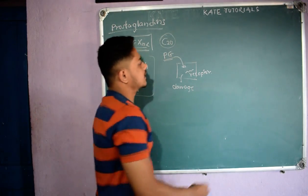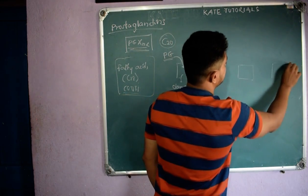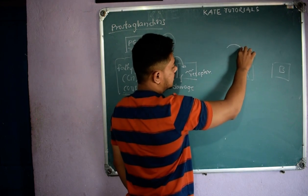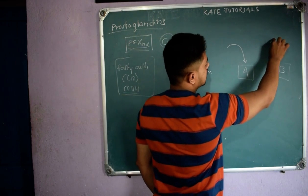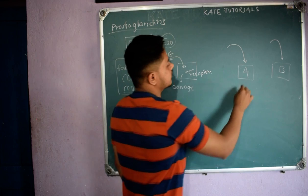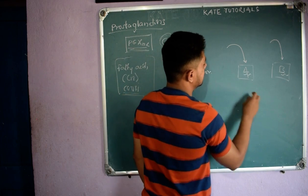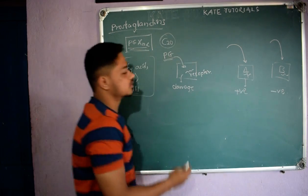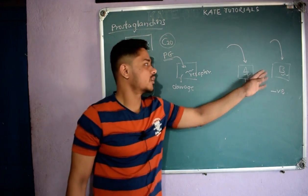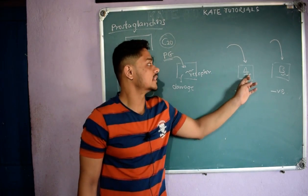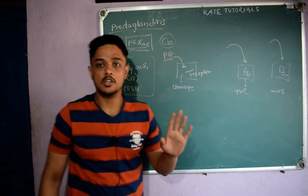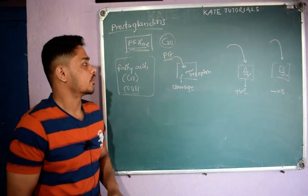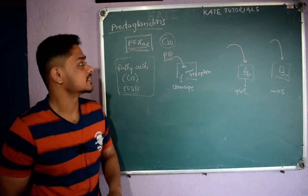Consider tissue A and tissue B. The same prostaglandins produced at A will also be produced at B. By reacting with receptors in tissue A it may give a positive impact, whereas in tissue B it may give a negative impact. So based on different tissues, prostaglandins will give a different response after reacting with the receptors present in those tissues.